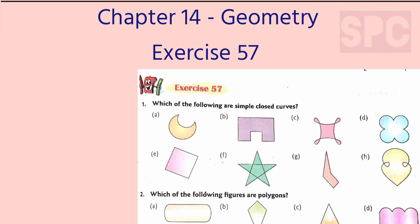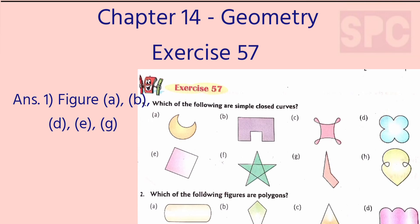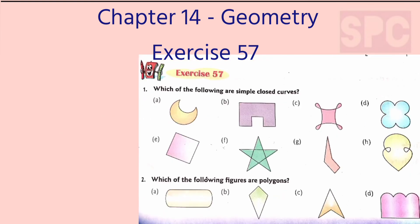Based on our understanding, let's solve Exercise 57. Question 1: Which of the following are simple closed curves? In this question, we have to find simple closed figures. Simple closed figures are figures which do not intersect themselves. Here in question 1, figures A, B, D, E, and G are all simple closed figures, as they are not open from any side and none of their lines are intersecting or cutting each other.